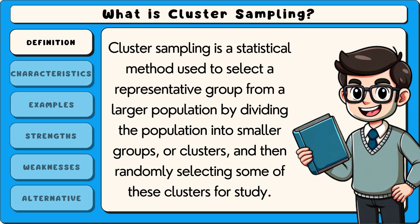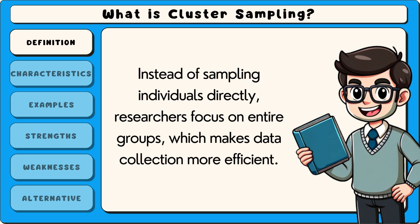Cluster sampling is a statistical method used to select a representative group from a larger population by dividing the population into smaller groups, or clusters, and then randomly selecting some of these clusters for study. Instead of sampling individuals directly, researchers focus on entire groups, which makes data collection more efficient.